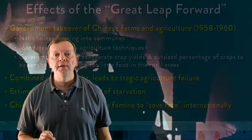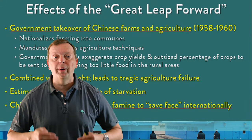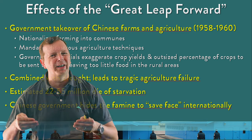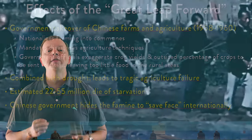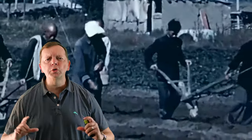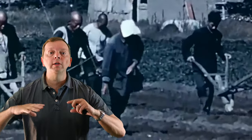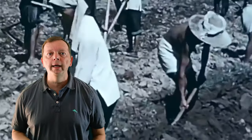Mao began to transform China into a communist country and took over the country's industries. In 1958, Mao took over the farms in what was known as the Great Leap Forward, which really wasn't a great leap. Instead of farmers farming their own fields, the government now owned these lands and farmed them by communes — small societies of people who all lived together and worked together for the good of the state.